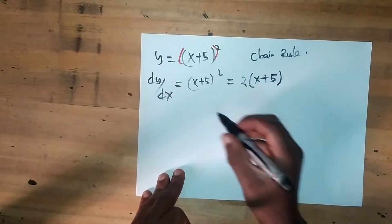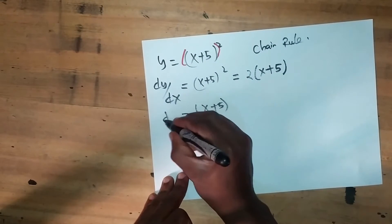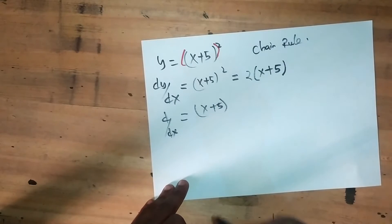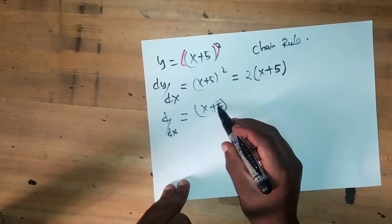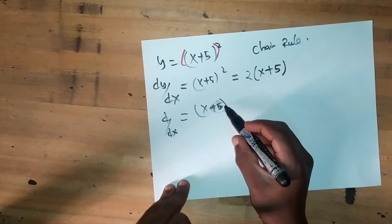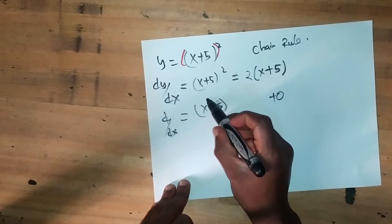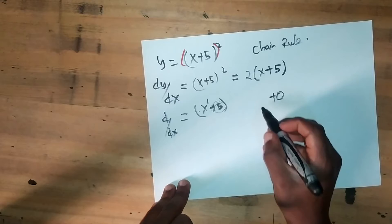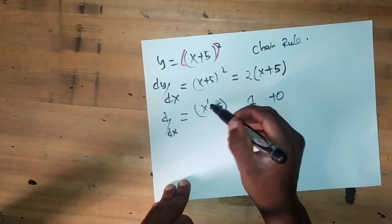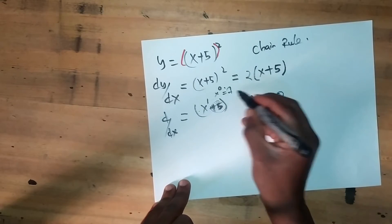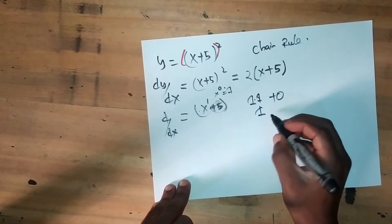The inner function is x plus 5. If we find the derivative with respect to x of this inner function, this 5 is a constant so its derivative is 0. This x has the power of 1; 1 will come to the front. We subtract the power of 1 by 1, so it becomes x raised to 0, which equals 1. So 1 times 1 — the output becomes just 1.